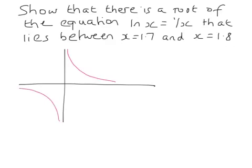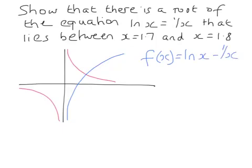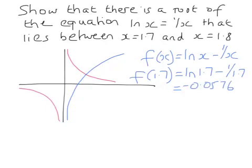And the graph of y equals ln(x) looks a little bit like that. We can see that there's going to be one solution. The way we're going to look at this is we're going to consider the function f(x) equals ln(x) minus 1 over x. And we're going to try 1.7, so we need ln(1.7) minus 1 over 1.7, and that works out to be minus 0.0576.